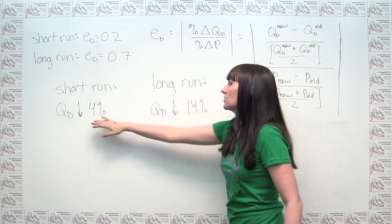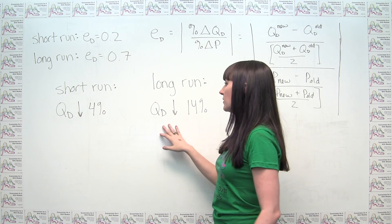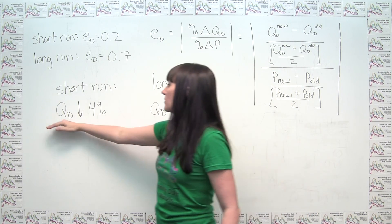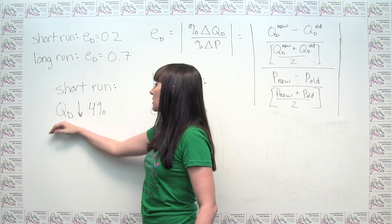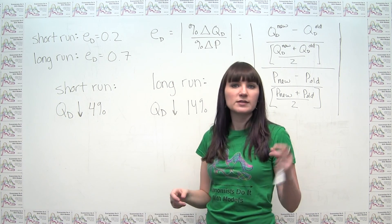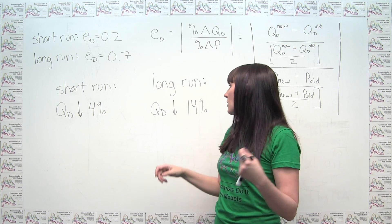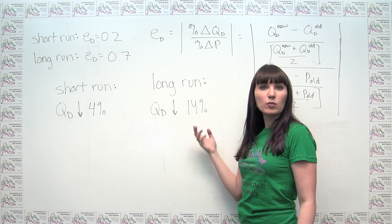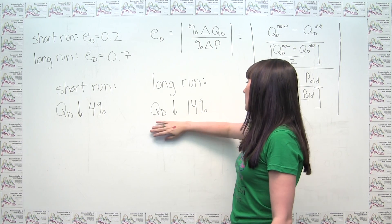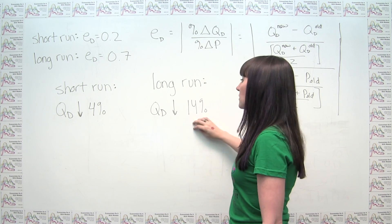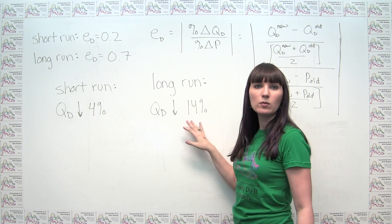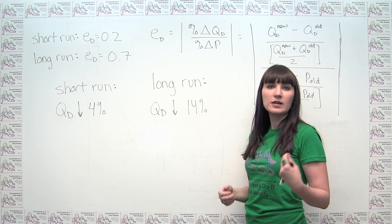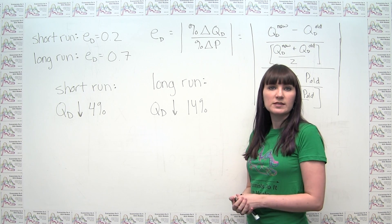We can also think about this through the percent changes in quantity demanded. In the short run we're stuck — we can only make quantity demanded go down by a little bit. But in the long run, in response to that same price change, we can make quantity demanded go down by more because we can find new ways to switch away from the heating oil that increased in price.